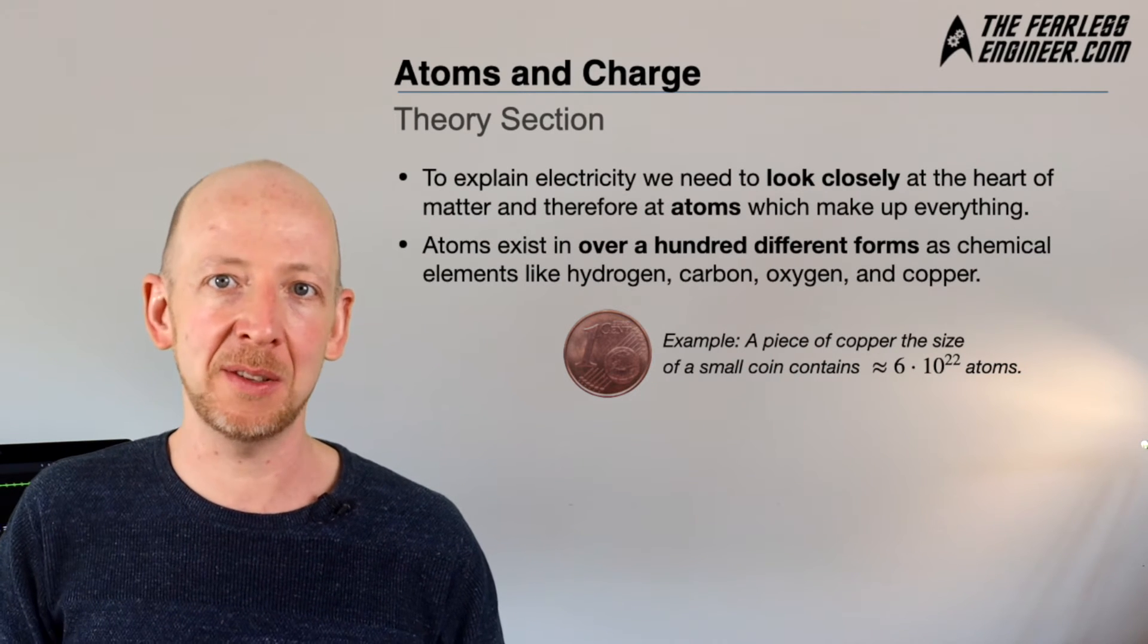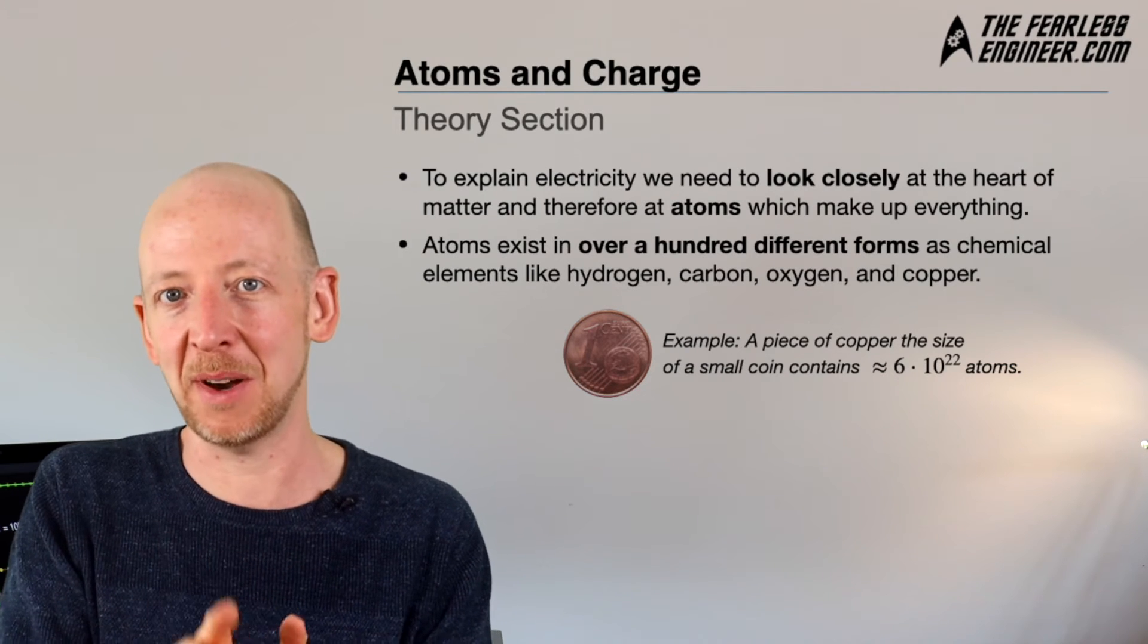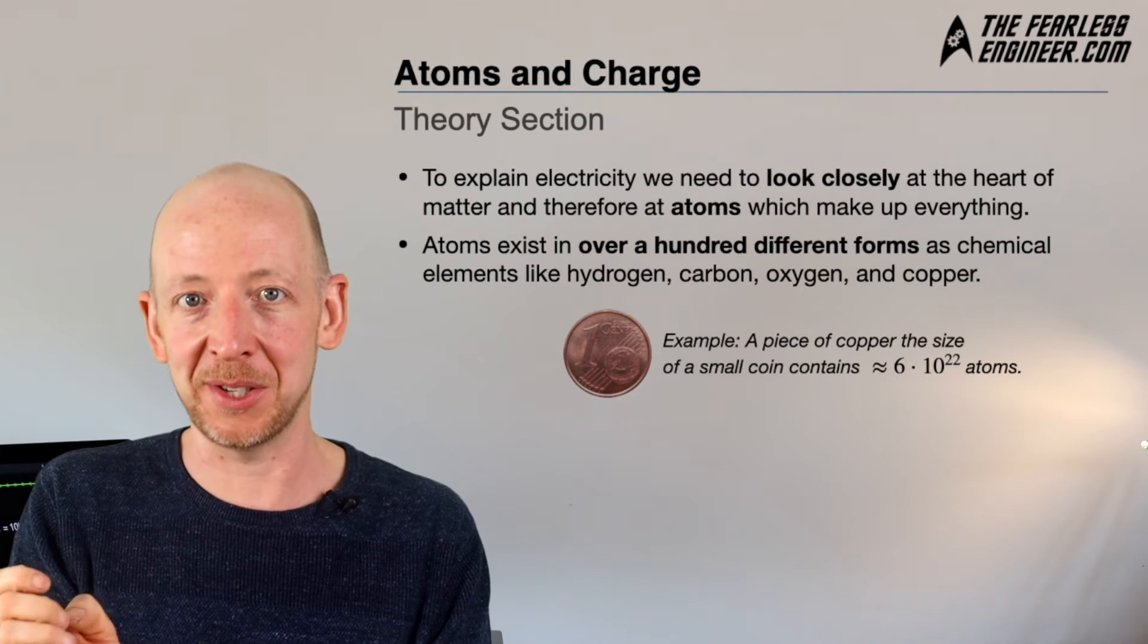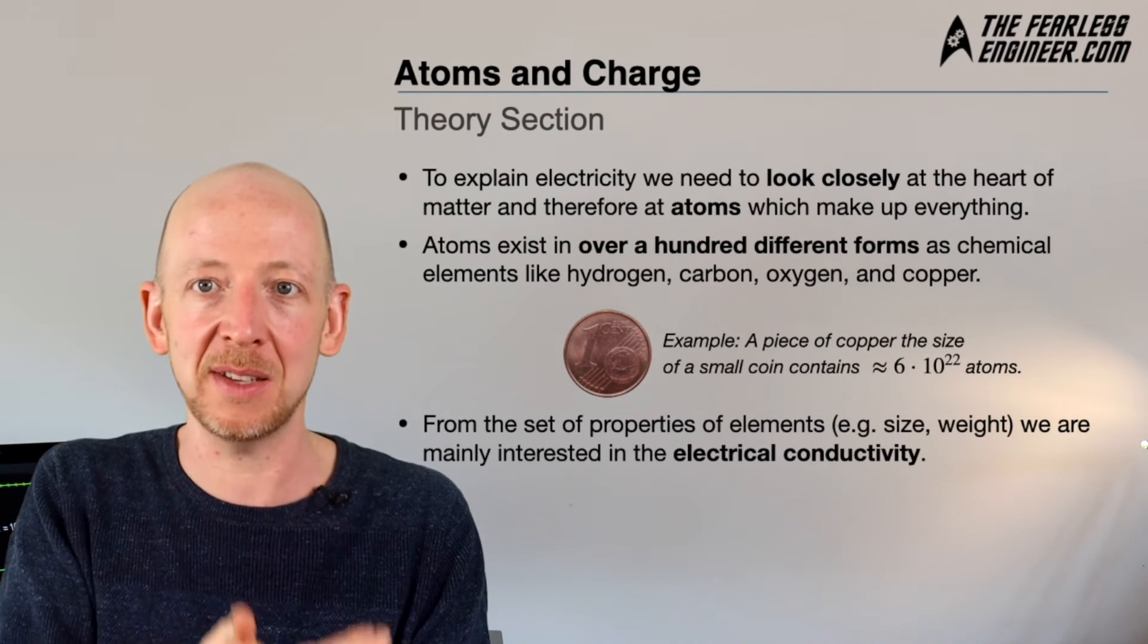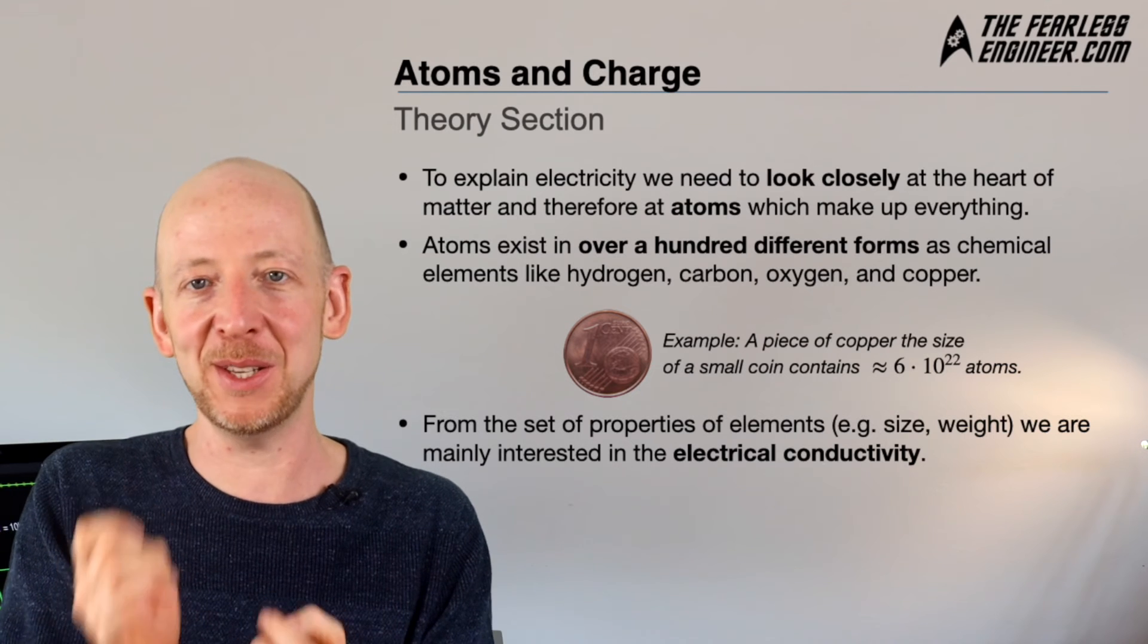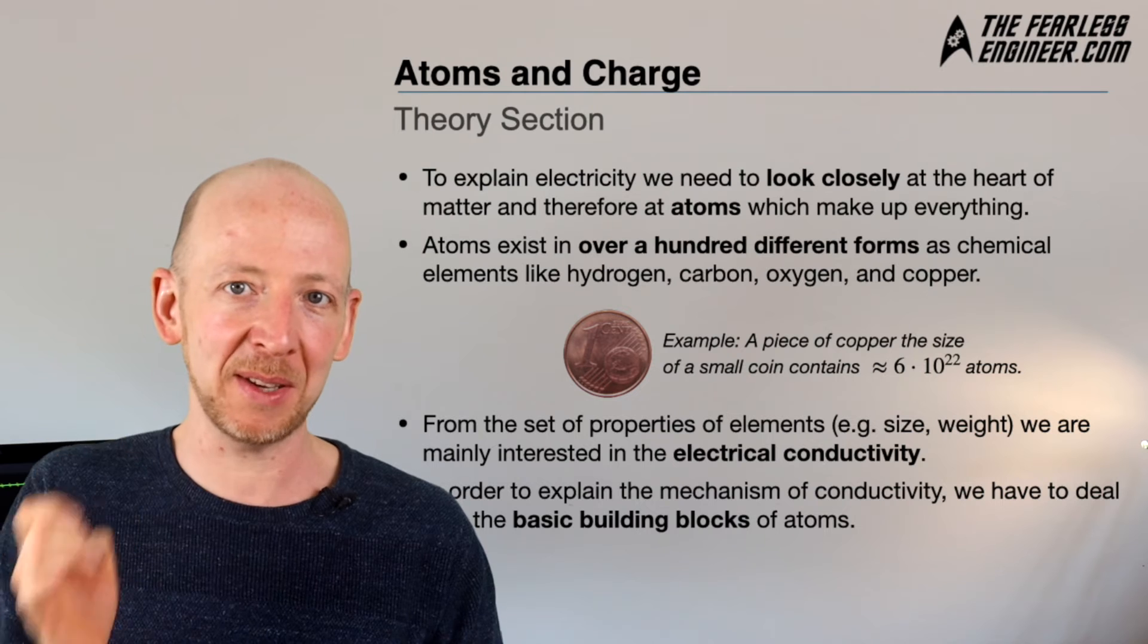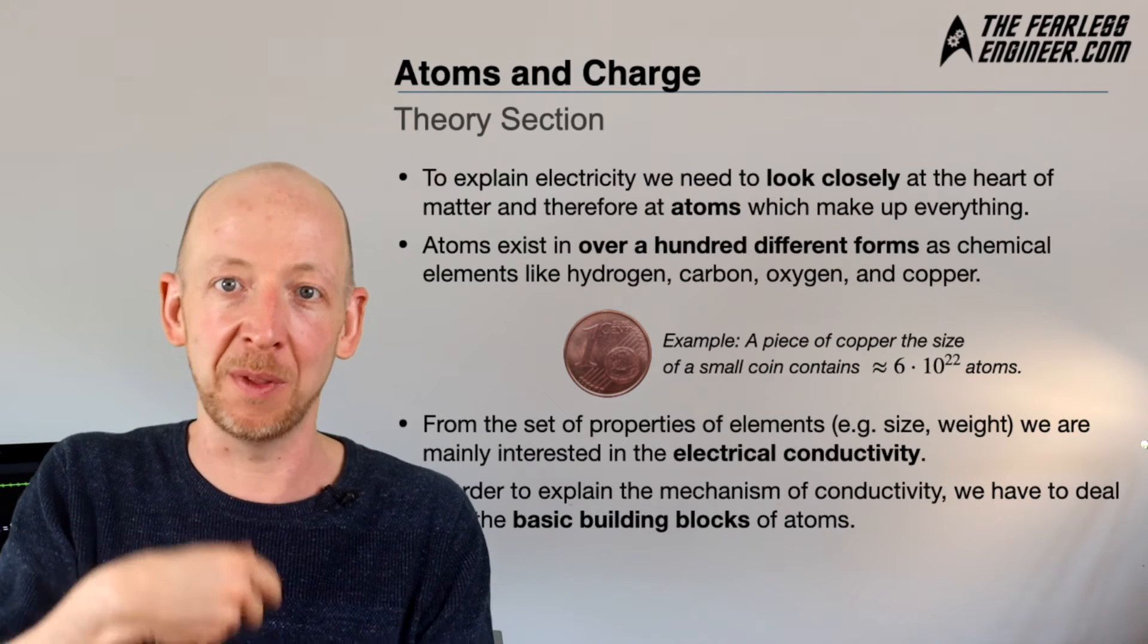In the small image, you can see a copper coin. This small piece of copper actually contains 6 times 10 to the power of 22 atoms—a very large number. From the set of properties of elements, which includes size and weight, we're mainly interested in electrical conductivity. To discuss the mechanisms behind conductivity, we have to deal with the basic building blocks within atoms: protons, neutrons, and electrons.